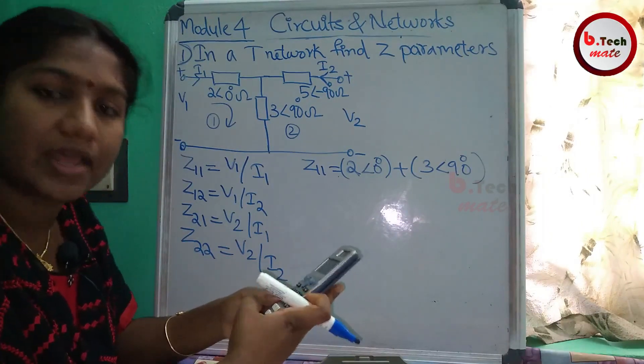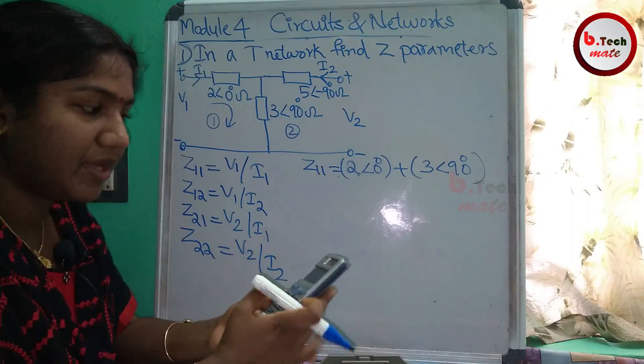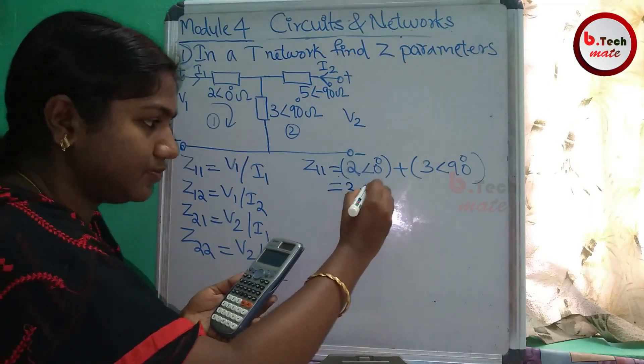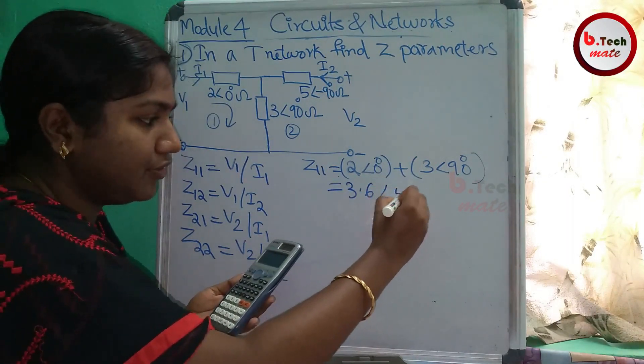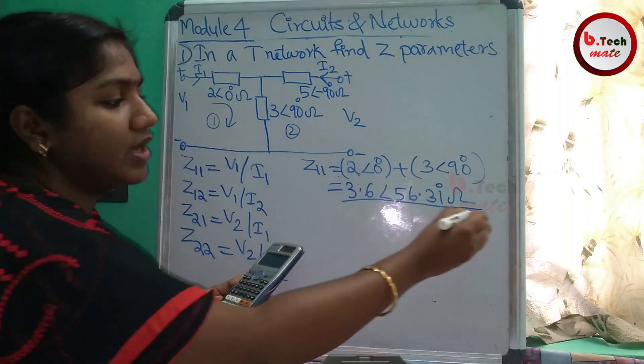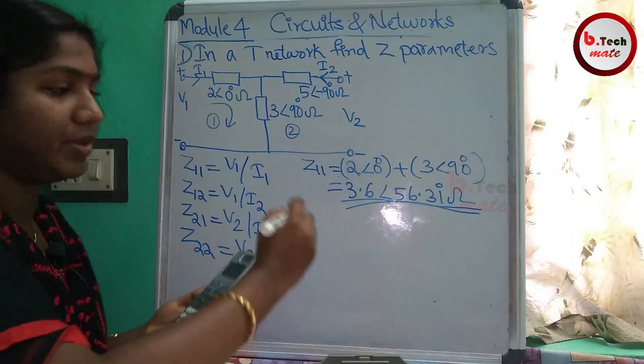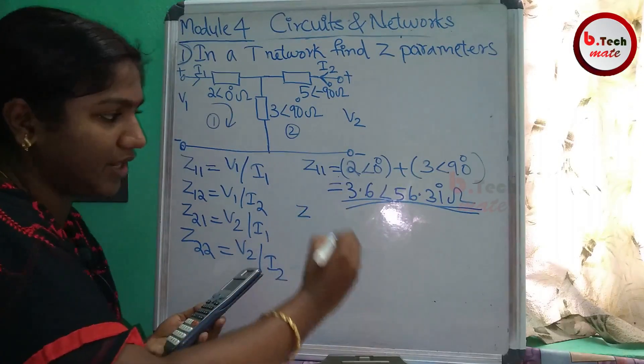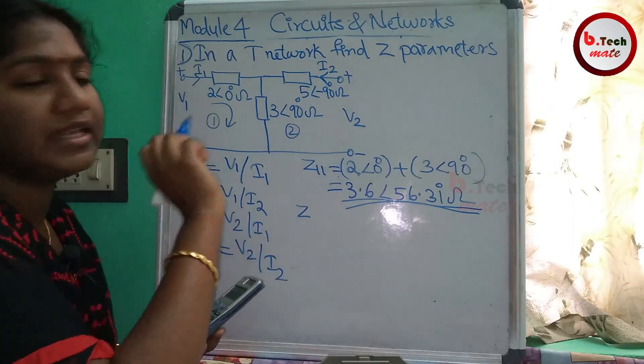When you do 2 angle 0, you get the value. There is a unit of impedances. Z1 is equal - this is the T-Network.